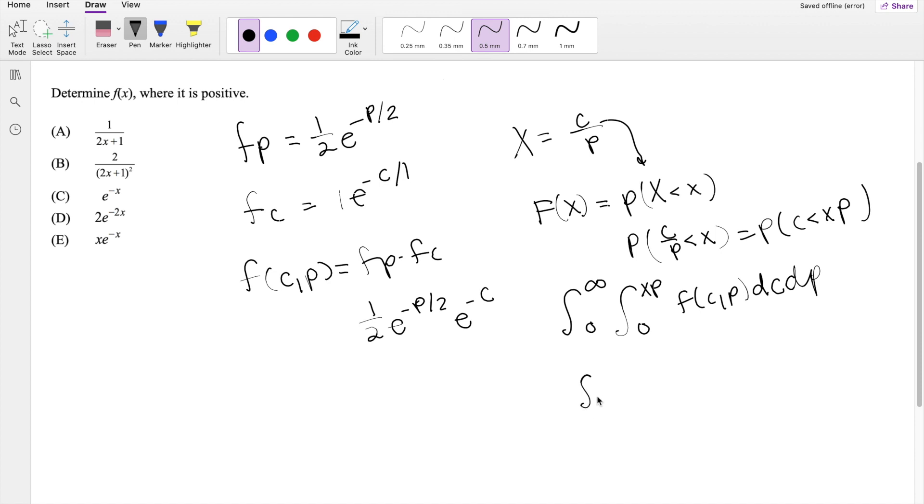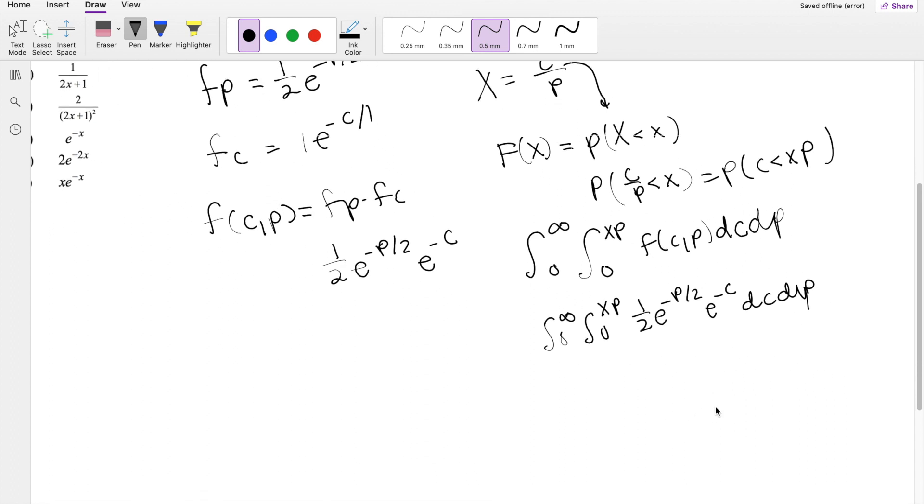Of the joint function here F of C, P, integrating with respect to dC first and then dP, where C is the claim and P is the premiums. So plugging in our function, you get 0 to infinity, 0 to xP. Our function here is 1 half e to the negative P over 2, e to the negative C, dC dP. So when we integrate with respect to C, everything else is a constant, so it just becomes keeping the outer shell here, 1 half e to the negative P over 2 times negative e to the negative C, integrating from 0 to xP, dP.